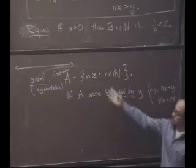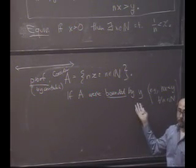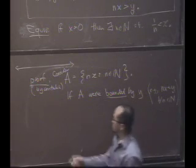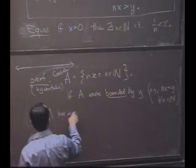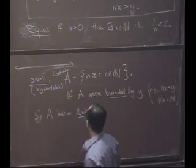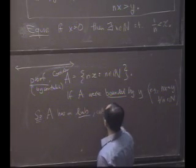But A is a collection of numbers, right? So, and it's bounded above. Therefore, it has a what? A least upper bound. So A has a least upper bound. By the least upper bound property. Let's call it alpha.